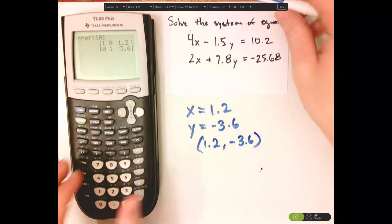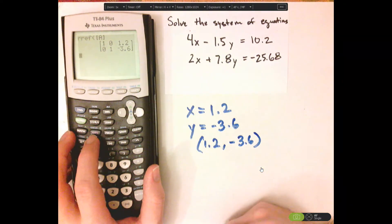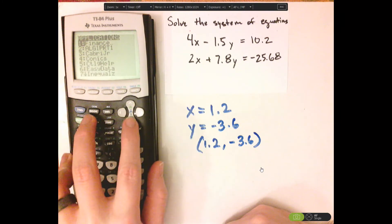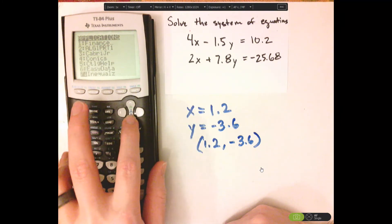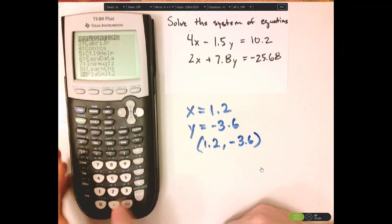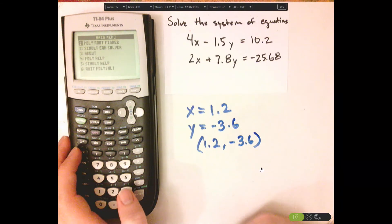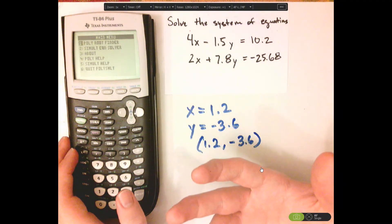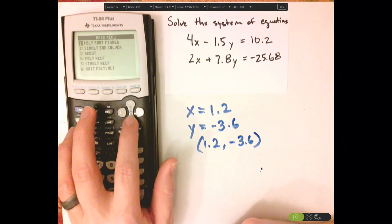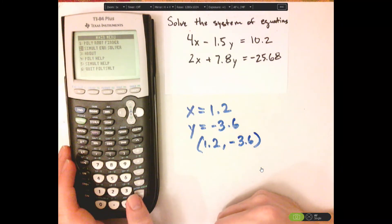There's another way to do it. There's an actual app for that, as they say. Click on apps and then go down to Poly Simultaneous. Now this also does polynomials — finds solutions for polynomials — and a simultaneous equation solver, which is a system of equations.